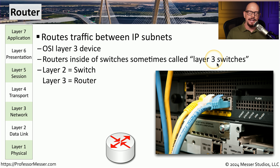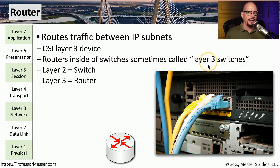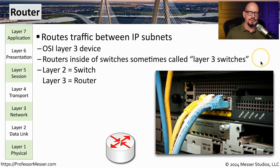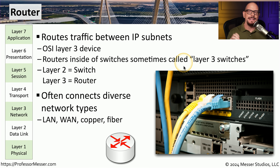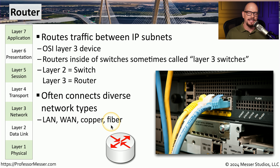You may sometimes see this routing functionality also included inside of an existing switch, and we often refer to these as layer 3 switches, which refers to that OSI layer 3 functionality. It's not that the switch itself is operating at a different OSI layer — within that same piece of equipment, we have both a layer 2 switch and a layer 3 router. These routers often connect many different types of networks, such as a local area network (LAN) to a wide area network (WAN), and may use copper-based or fiber-based connections.